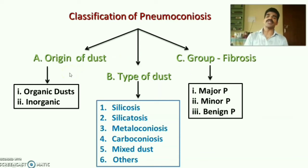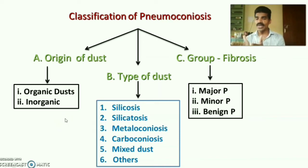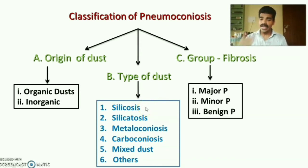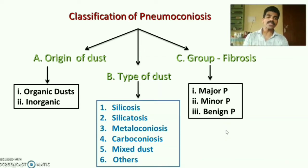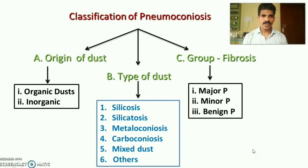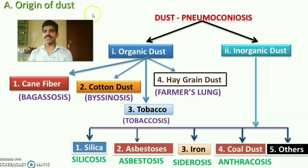According to origin of the dust, pneumoconiosis can be classified into organic dust and inorganic dust. According to the type of dust, it can be classified into silicosis, silicatosis, metalloconiosis, carboconiosis, mixed dust, and others. The third classification — according to formation of fibrosis — includes major pneumoconiosis, minor pneumoconiosis, and benign pneumoconiosis. This classification was covered in the first session.